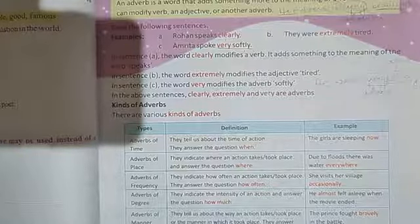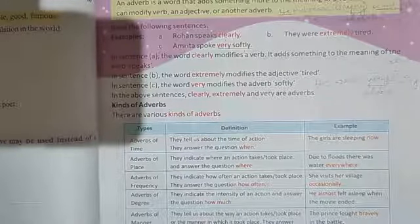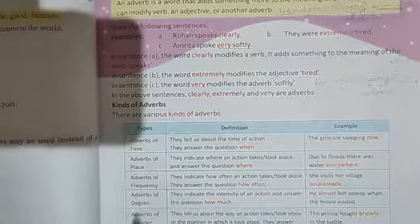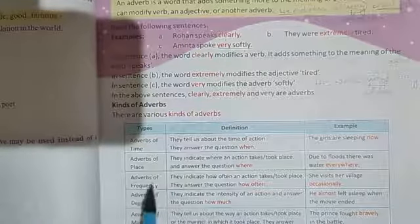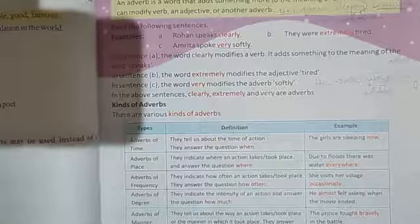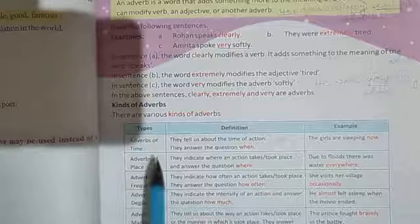Kinds of adverb. There are your seven kinds of adverb. First, adverb of time, adverb of place, adverb of frequency, adverb of degree, adverb of manner, relative adverb, interrogative adverb.